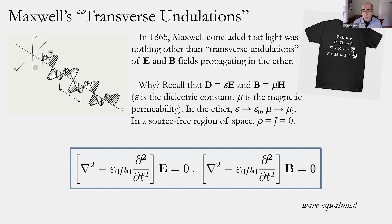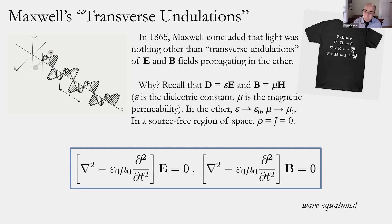This is why Maxwell started getting quite excited in 1865. He realized, largely because of his Cambridge Wrangler math tripos training, that this form of the equation is very familiar — this is the form of a wave equation for a traveling wave.